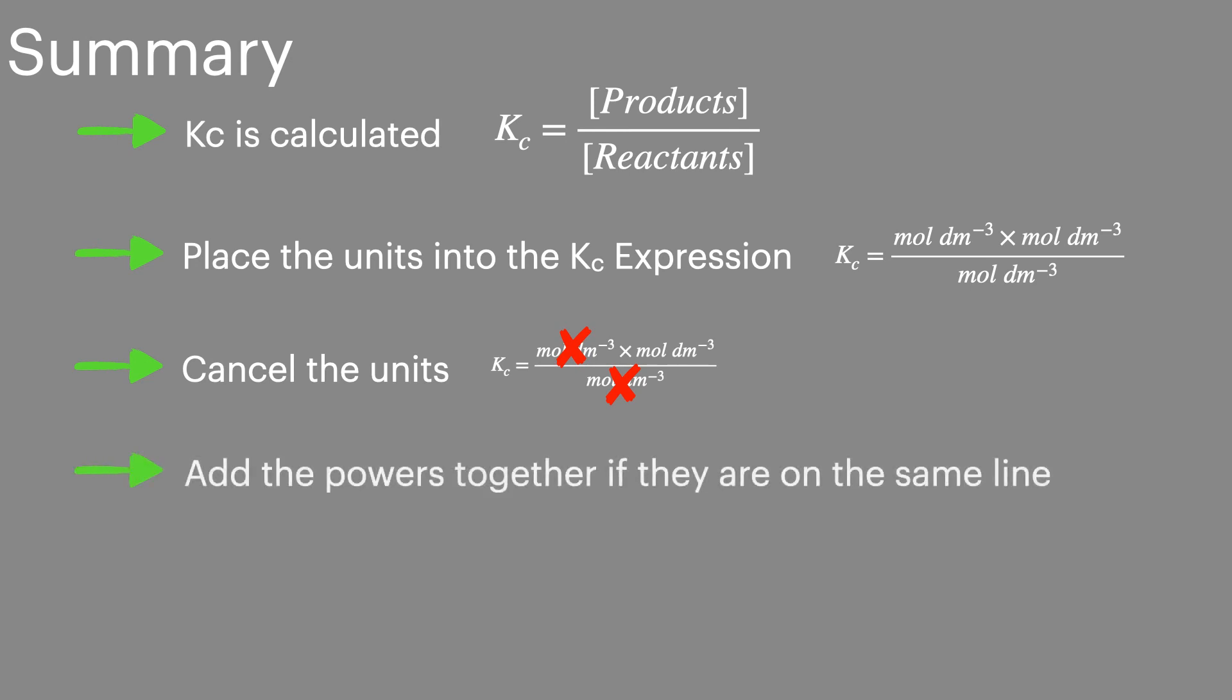If you end up with two sets of units on the same line you can add those powers together to combine the units and if you end up with a set of units underneath the line you can move that set of units up onto the top line and when you do this you change the sign on the powers.